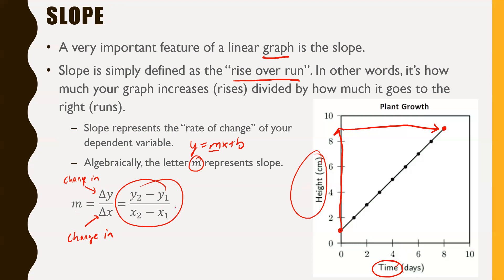Or you can use the formula: y₂ minus y₁ over x₂ minus x₁. What that means is: if you pick two points — call one (x₁, y₁) and another (x₂, y₂) — you can find your slope by going y₂ minus y₁ divided by x₂ minus x₁. Though I think it's way easier just to use rise over run, especially if you have a graph.